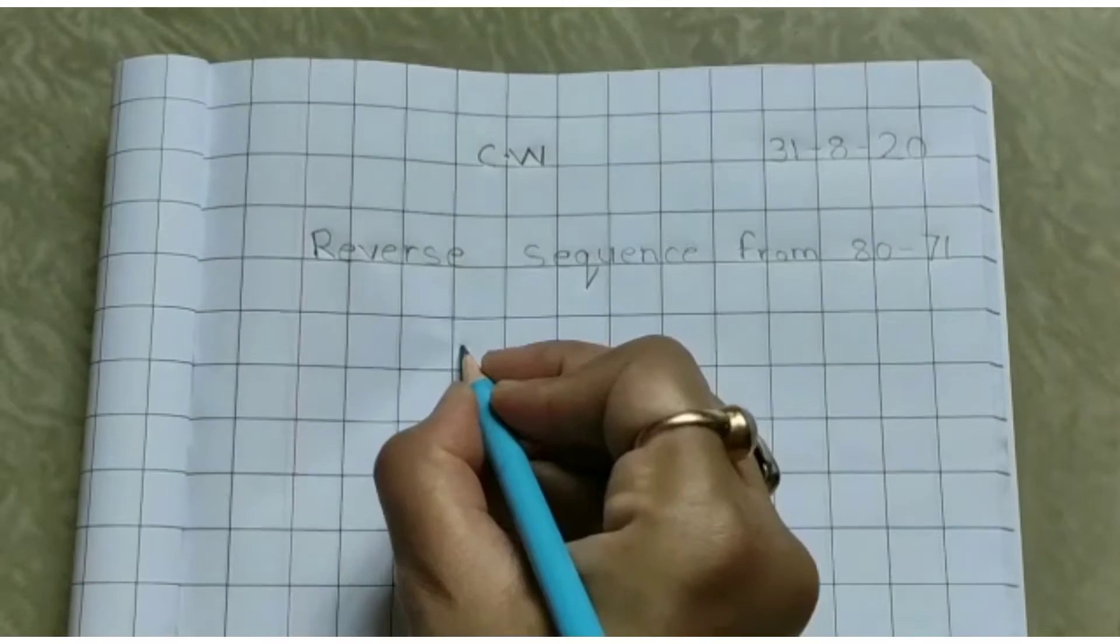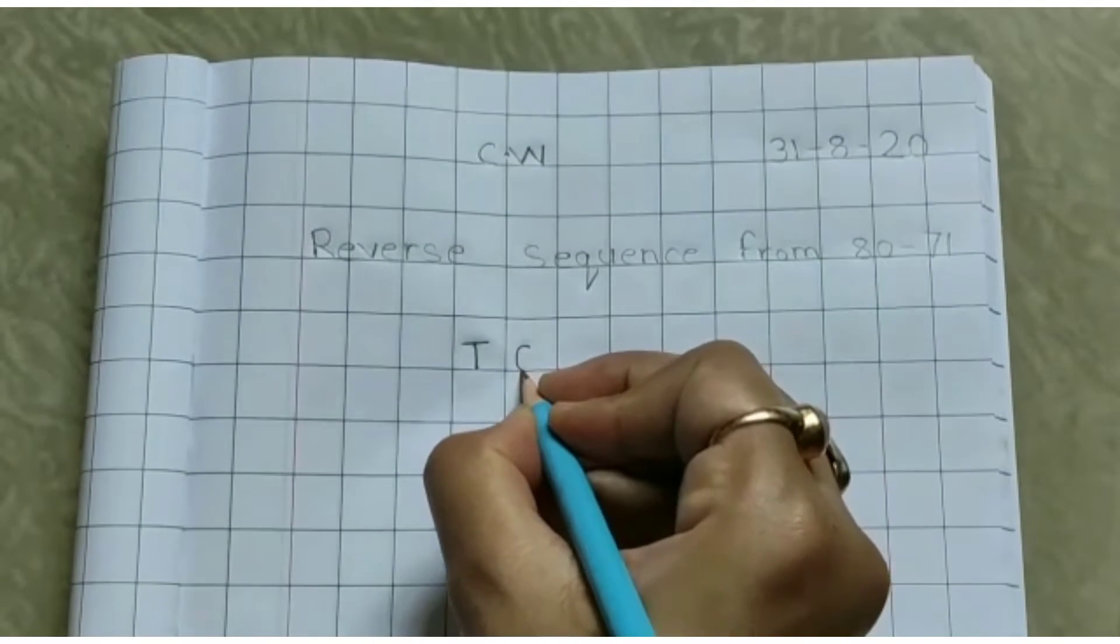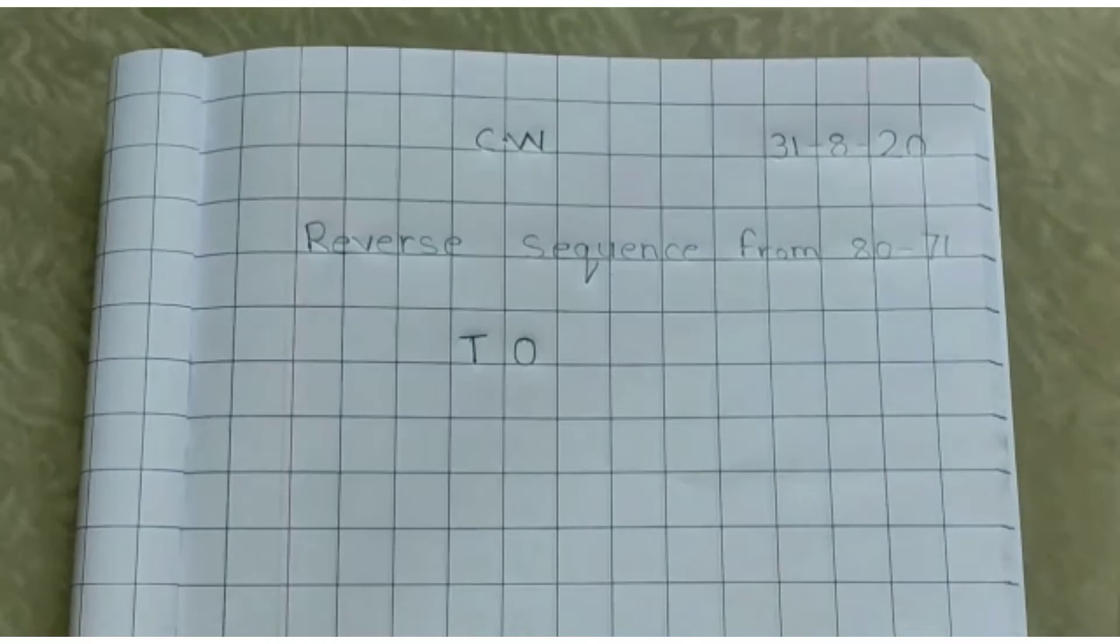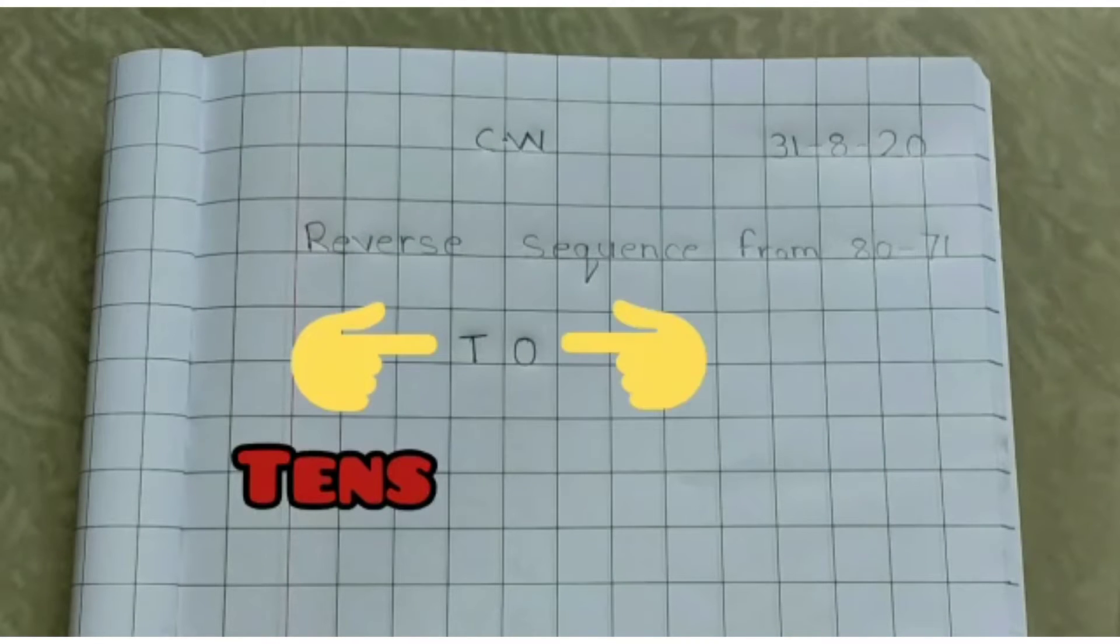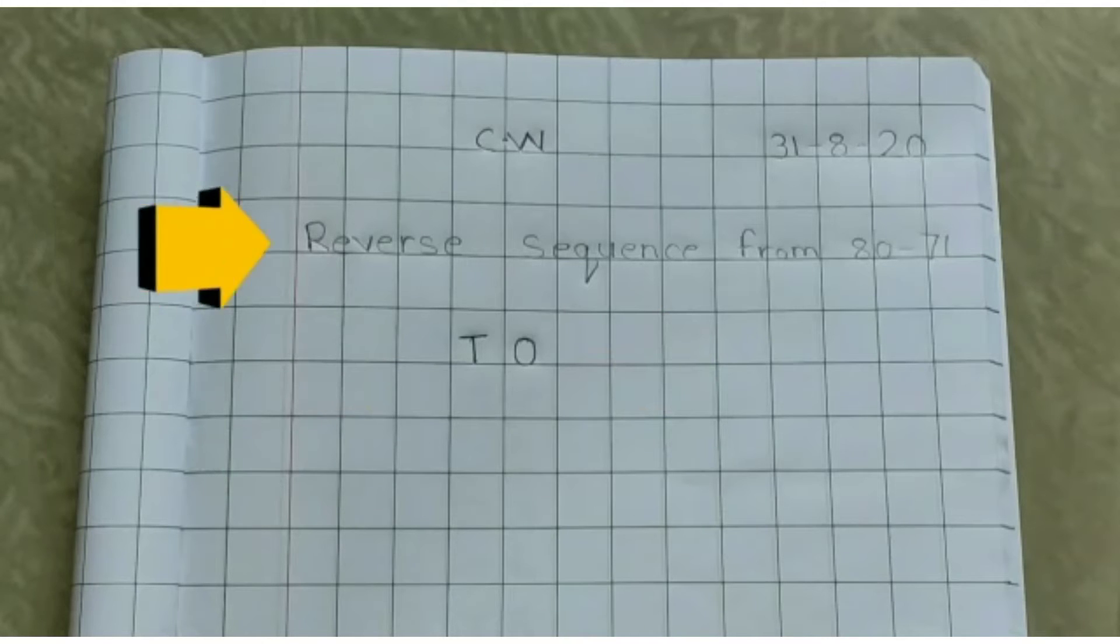Now write T, O. Children, as you know, T means tens and O means ones. Now we will write reverse sequence from 80 to 71. Let's begin.